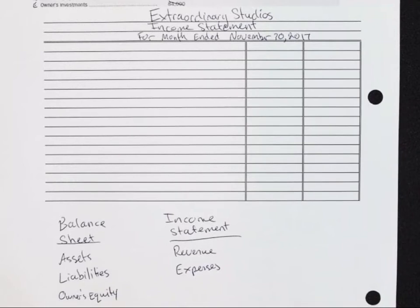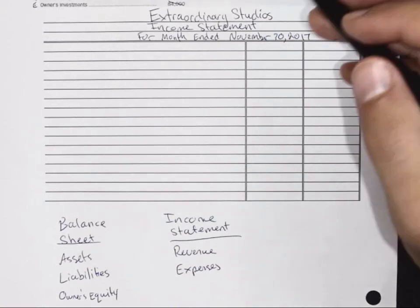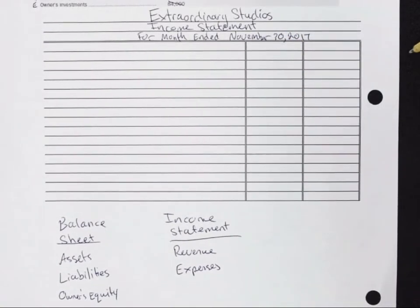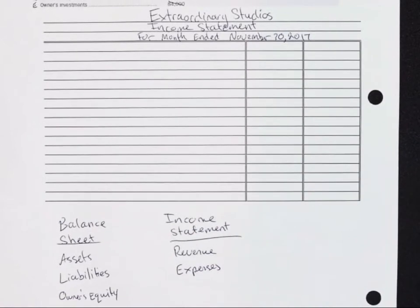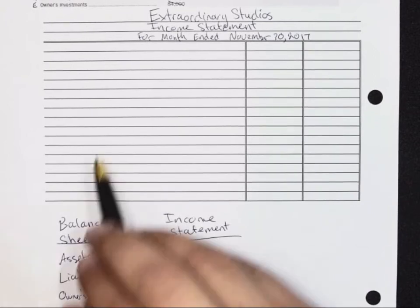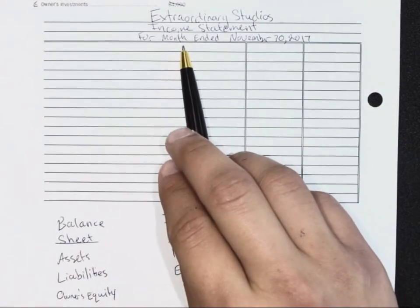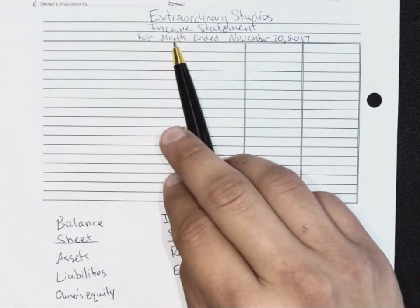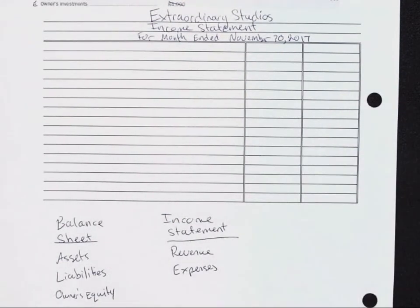An income statement is a period of time. If you just write November 30th, 2017, does the end user know what period of time that covers? No — it could be a year, a month, a week, six months, or a quarter. So writing 'For Month Ended November 30th' tells the end user this covers November 1st through November 30th. You could also write November 1st, 2017 to November 30th, 2017 — that's fine — as long as you let the end user know the period of time the income statement is referring to.